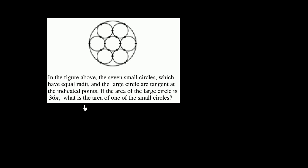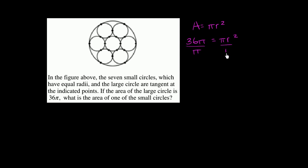So let's think about how we could do this. If we know the area of the large circle, we could figure out the radius of the large circle. If we know the radius of the large circle, we should be able to figure out the radius of one of these smaller circles. So we know that area is equal to pi r squared, and the area of the larger circle is 36 pi. So 36 pi equals pi r squared. We divide both sides by pi, and we're left with the radius of the larger circle. So the radius of the larger circle squared is equal to 36.